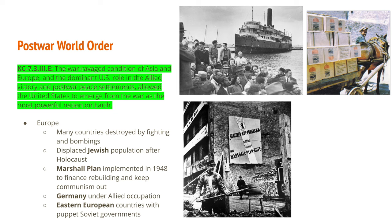Germany was to be under Allied occupation. This was decided at the Yalta Conference and then again at the Potsdam Conference. There would be several different German zones controlled by the United States, the Soviet Union, and Great Britain. Eastern European countries were theoretically allowed to choose their own governments, but in reality they became puppet Soviet governments, making up what was called the Eastern Bloc.